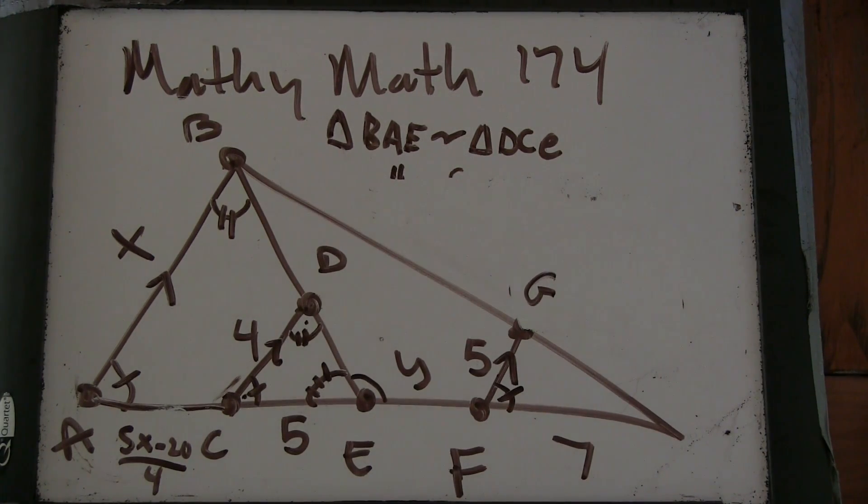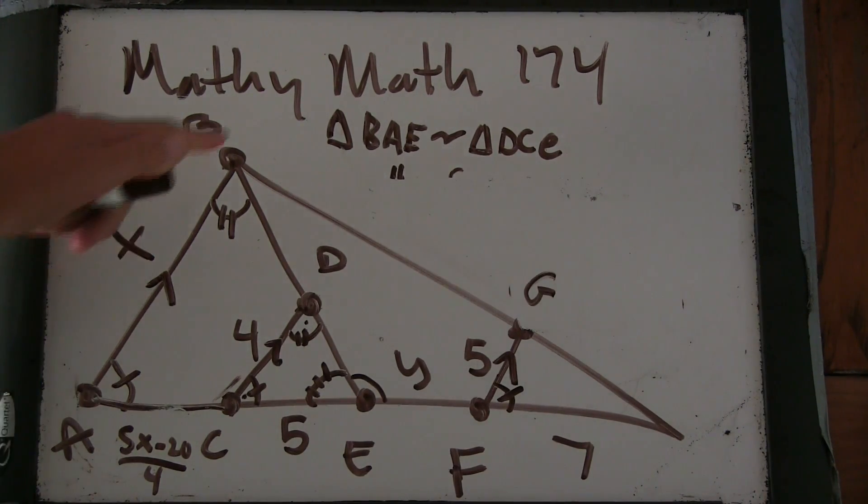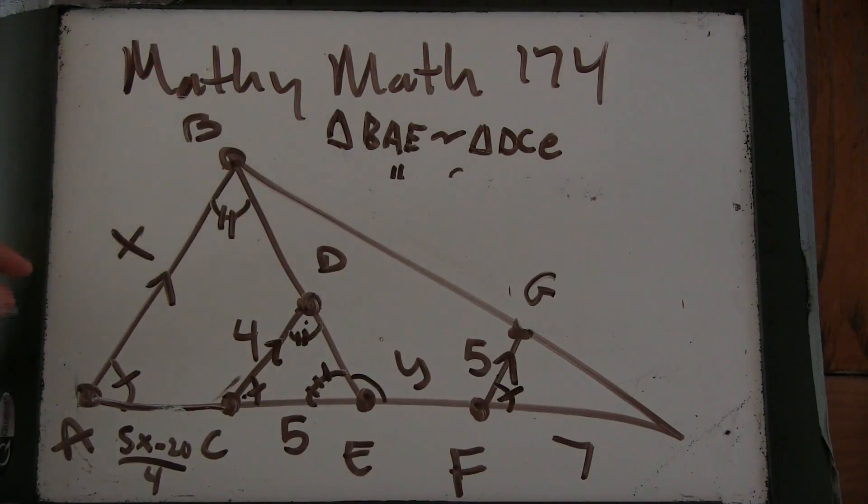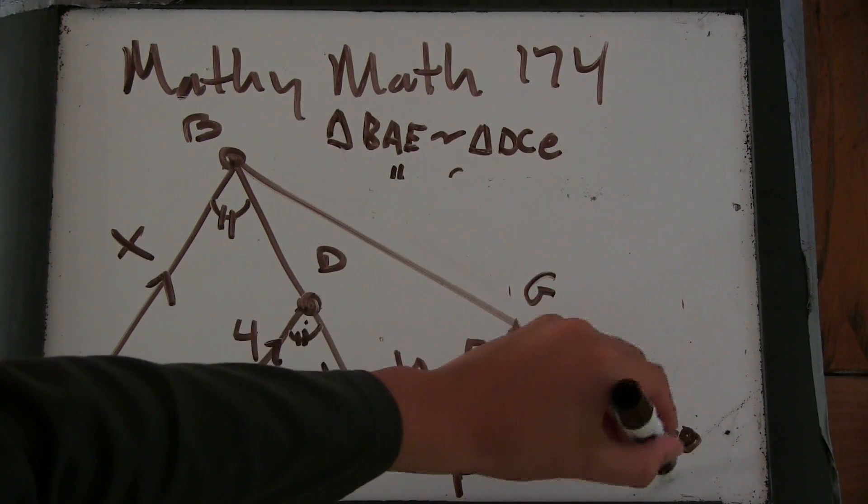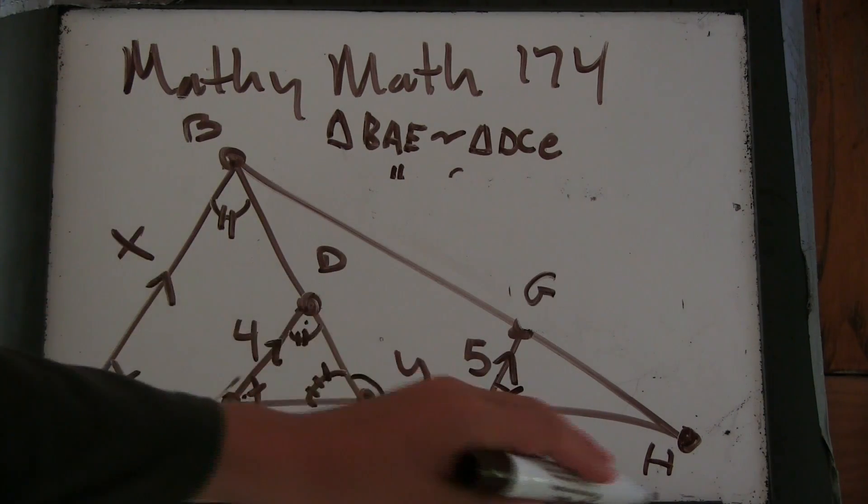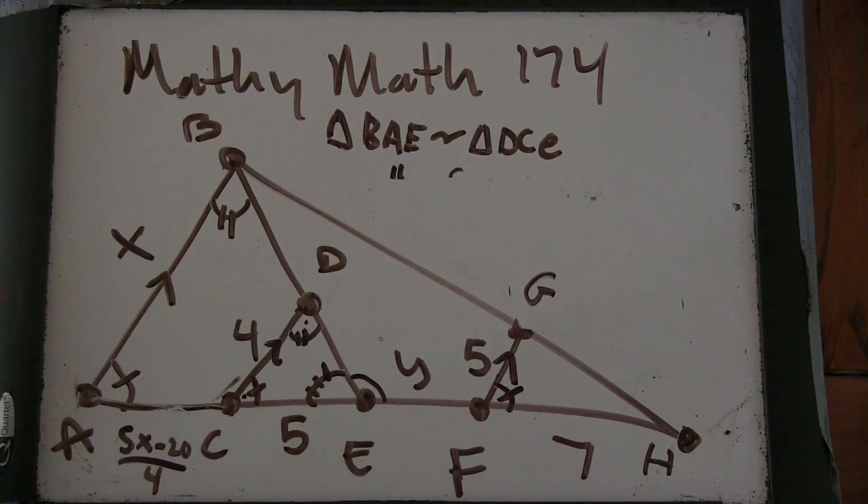Well what triangles are there? We have this big triangle, this one and this one which we have found that they're similar, but we need to get X and Y in the same equation.